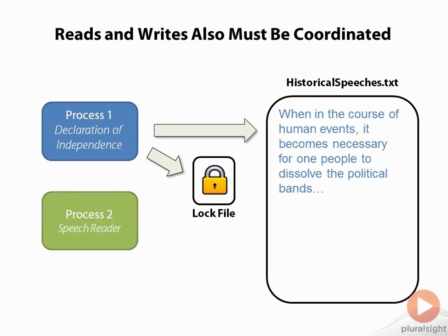So far, we've talked about the situation where two processes are trying to write to the file at the same time. However, the same scenario applies if one process is trying to write to the file and one process is trying to read the file. The process trying to read the file will likely read data that is incomplete or inconsistent if it tries to read while another process is writing. So in this case, the process that is trying to read the file also has to honor the lock file, and by seeing the lock file, it knows that it needs to wait until another process is finished writing.